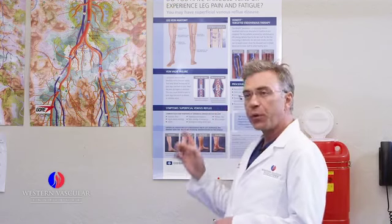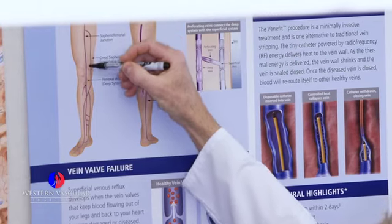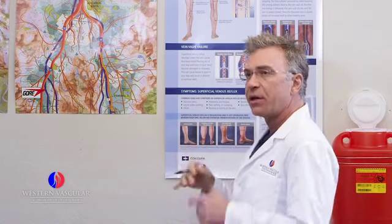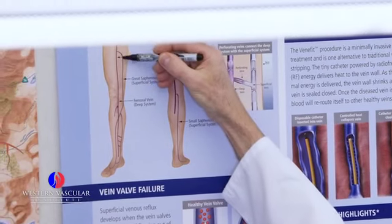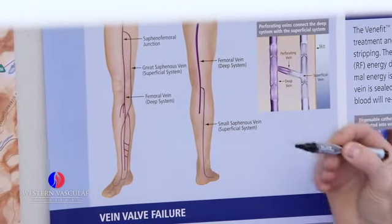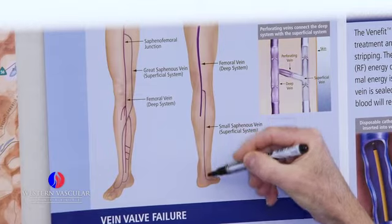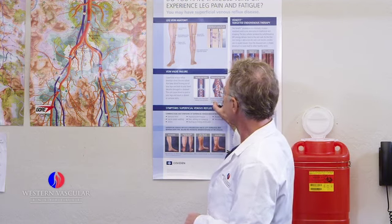Part of the workup for venous insufficiency and varicose veins involves a physical examination to evaluate the lower legs for swelling or skin discoloration, and most importantly, ultrasound. Here's the schematic of the deep veins and the superficial veins. The veins we're particularly interested in are the superficial ones — the greater saphenous vein, which courses from the groin along the inside of the thigh all the way down to the ankle, and the small saphenous vein on the back of the calf, which can also become dilated. On ultrasound we look at the vein diameter and the function of the valves inside.